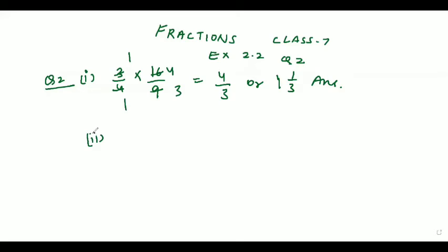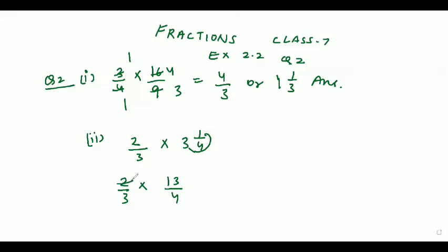Let's move to the second part of Question Number 2. We need to evaluate 2 whole 2/3 into 3 whole 1/4. It can be written as 8/3 into 13/4. Here it can also get cancelled. So the answer is 13/6, or we can write 2 whole number 1/6.